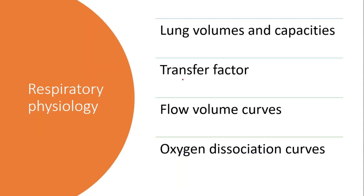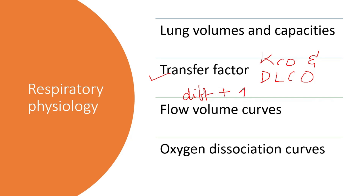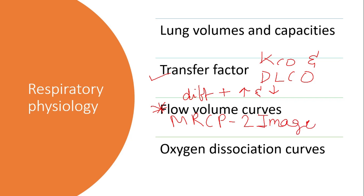Respiratory physiology is a very important topic especially for basic medical sciences for MRCP part 1. Transfer factor is MRCP's favorite topic. Among the things you have to know about transfer factor in detail is KCO and DLCO — the difference between these two and the causes of increased and decreased KCO and DLCO. Flow volume curves are very important especially for MRCP part 2, where you get image-based questions. Your concepts must be very clear as to which curve represents which disease. Let me know in the comments if you'd like me to make detailed videos on it, because this is a topic you cannot afford to miss.